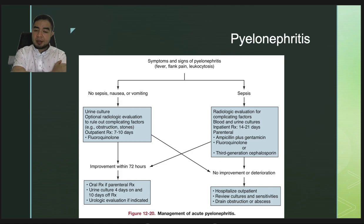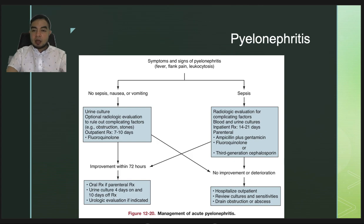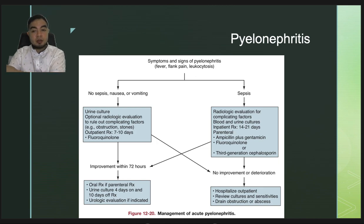Here is an algorithm for a patient presenting with the triad of fever, flank pain, and leukocytosis without sepsis. If there is nausea or vomiting, obtain urine culture, perform radiologic evaluation, and treat with 7 to 10 days of fluoroquinolones. If improvement occurs within 72 hours, shift to oral antibiotics and complete the course with a urine culture follow-up.